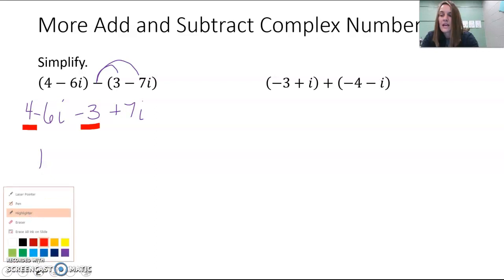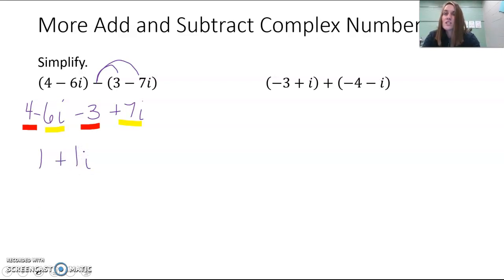And then we have negative 6i plus 7i. Don't forget the negative in front of the 6. And negative 6 plus 7 would be a positive 1. And then they both have an i. You only add the coefficients there. You're not going to change anything about the i. That would be if you were multiplying or dividing. So we have 1 plus 1i, which we could just rewrite as 1 plus i.